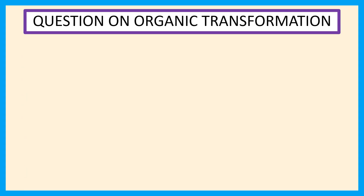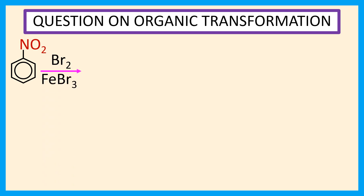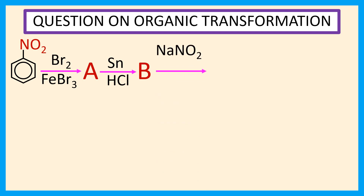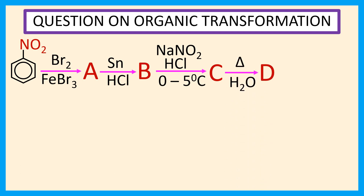Welcome everyone. This is a question on organic transformation. Nitrobenzene reacts with bromine in the presence of FeBr3 to give compound A. Compound A reacts with Sn in the presence of HCl to form compound B. Compound B reacts with NaNO2 in the presence of HCl at 0 to 5 degrees centigrade to yield compound C. When compound C is heated with H2O, compound D is produced.